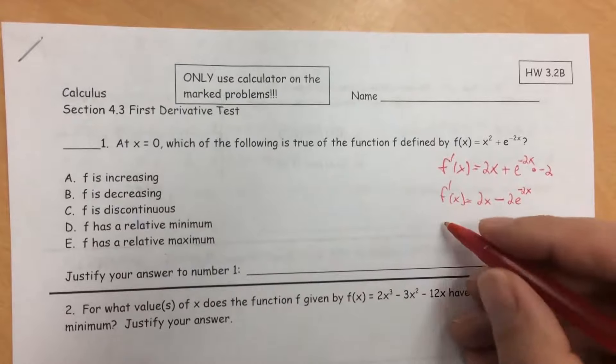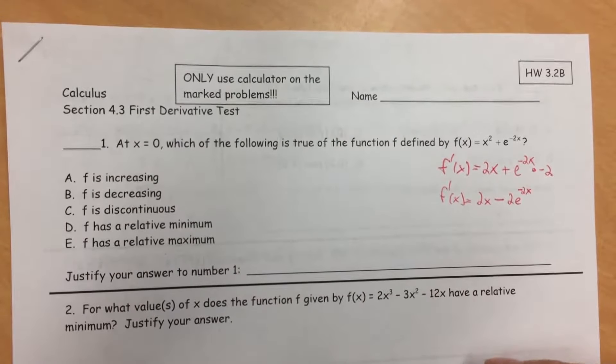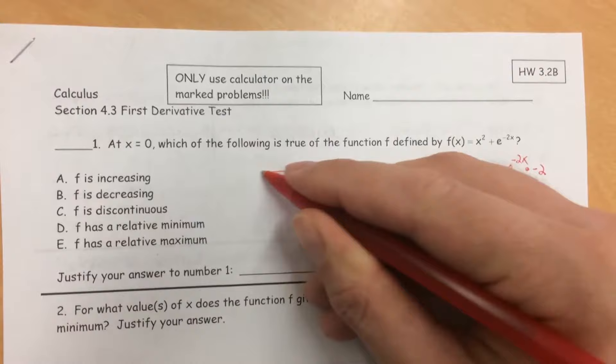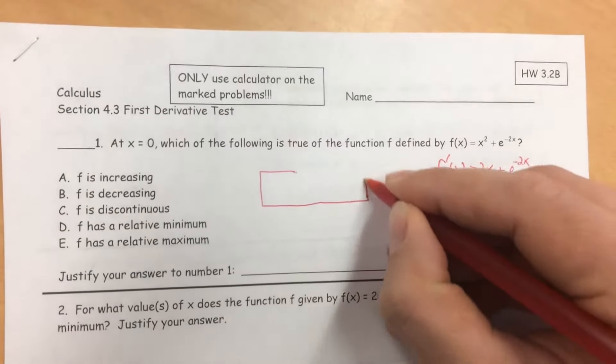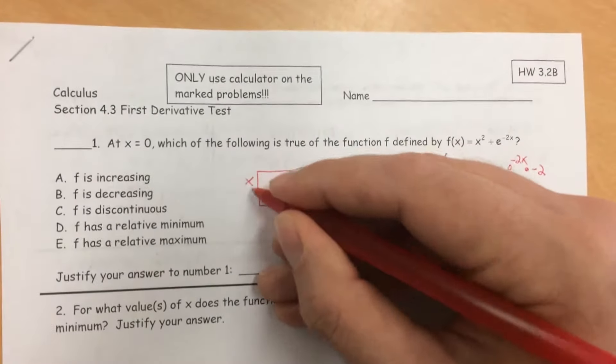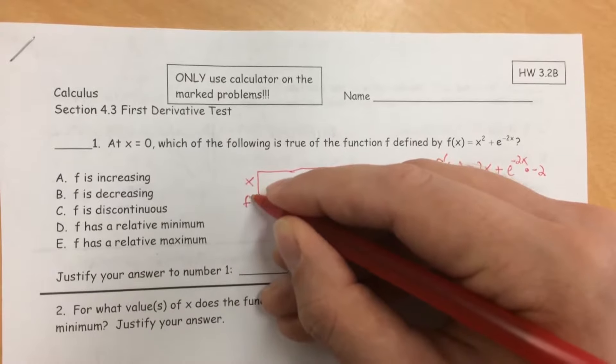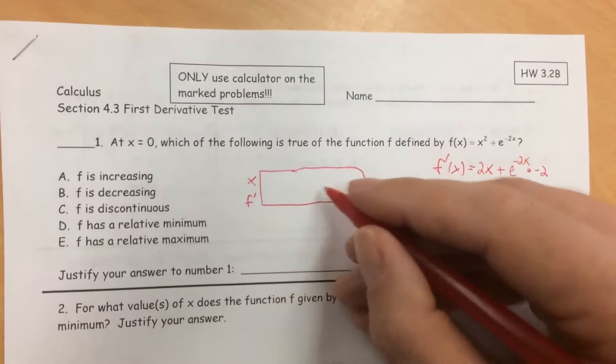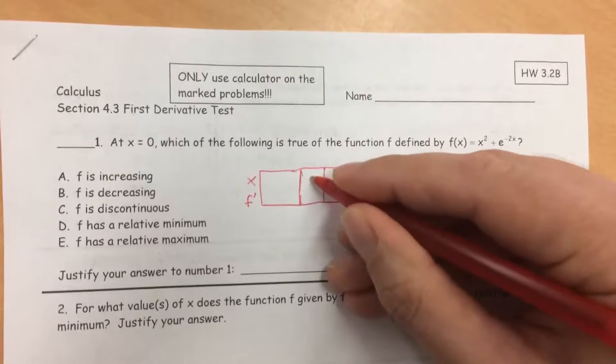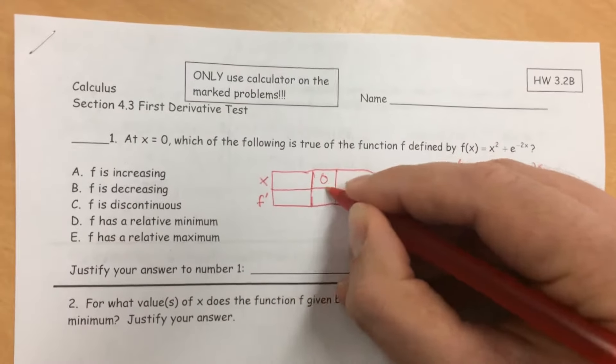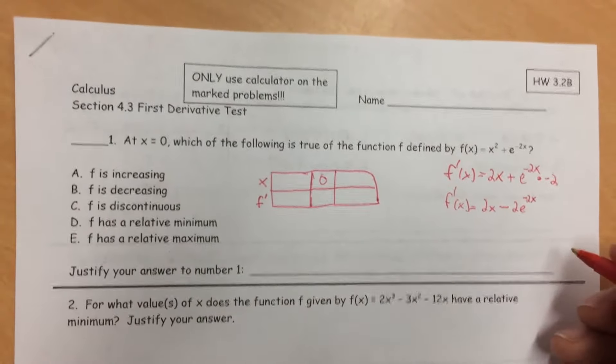At x equals 0, we want to know if f is increasing. So I'm going to make a sign chart here. I find it easiest. We're going to see x, f', and really we're only looking at one spot. We're looking at when x equals 0, what is f'(x) equal to? So maybe a sign chart is too much.